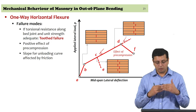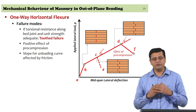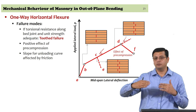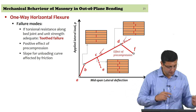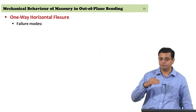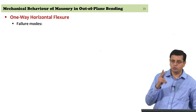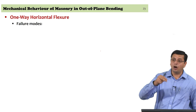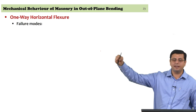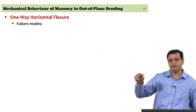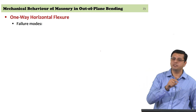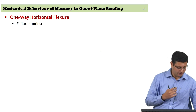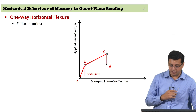The post-peak behavior beyond C-to-E or D-to-F really depends on how much pre-compression is available, which affects frictional resistance. If you have a good friction coefficient and high pre-compression, you could get a rather stiff behavior in the post-peak region. This is affected by pre-compression in two ways: pre-peak, how much bed joint failure can be delayed; and post-failure, how much frictional resistance and what slope in the post-peak region is available.